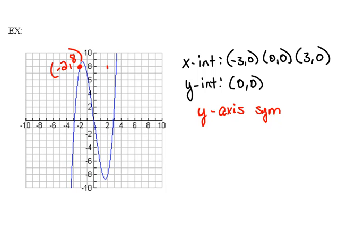So 2, 8. Now that point is not on the graph either. So there is no y-axis symmetry.